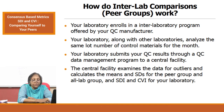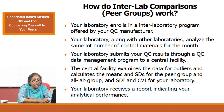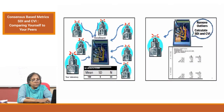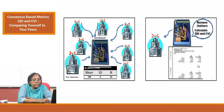There are two kinds of calculations, and the SDI and CVI are calculated for your laboratory. Your laboratory receives a report indicating your analytical performance. This is the ideal situation — you do your peer group enrollment along with your subscription to the IQC program simultaneously. Your quality control material is analyzed for a month, the data is fed to the central facility who removes outliers, calculates SDI and CVI, and sends you the report.